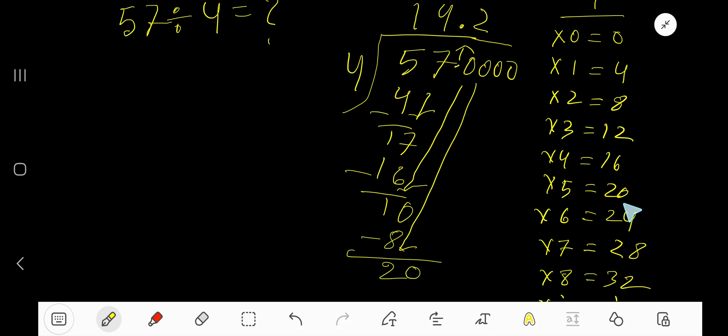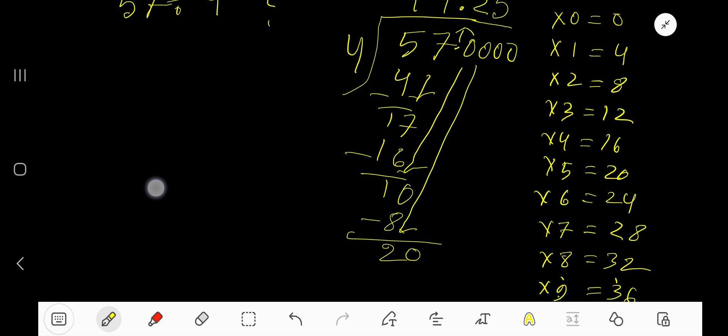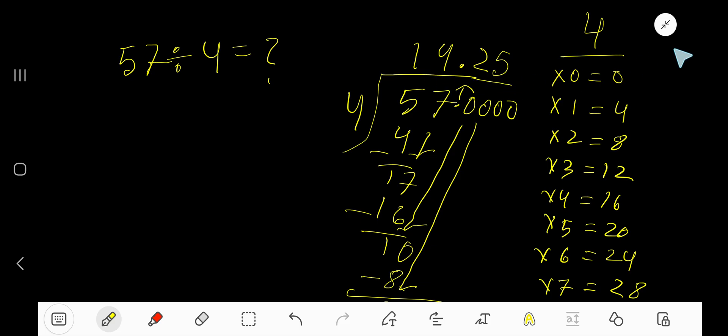4 goes into 20 how many times? 4 goes into 20 5 times. 5 times 4 is 20, subtract 0. So our answer is 14.25.